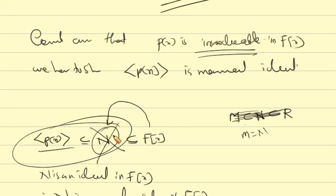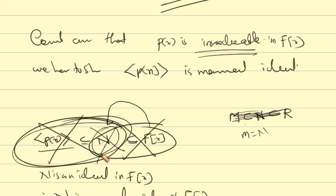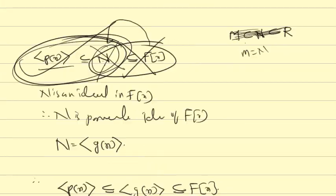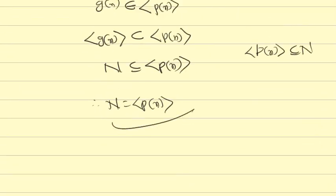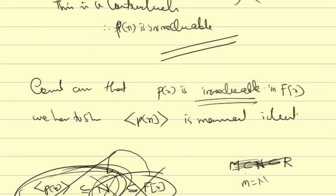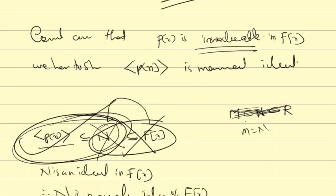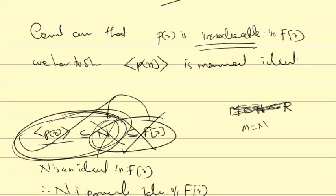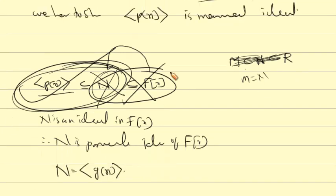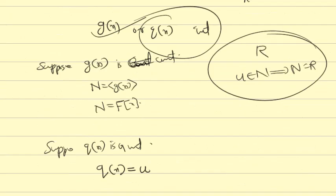Therefore N equals the ideal generated by p(x). Since p(x) is an irreducible polynomial, the ideal generated by p(x) is a maximal ideal. The proof is complete.